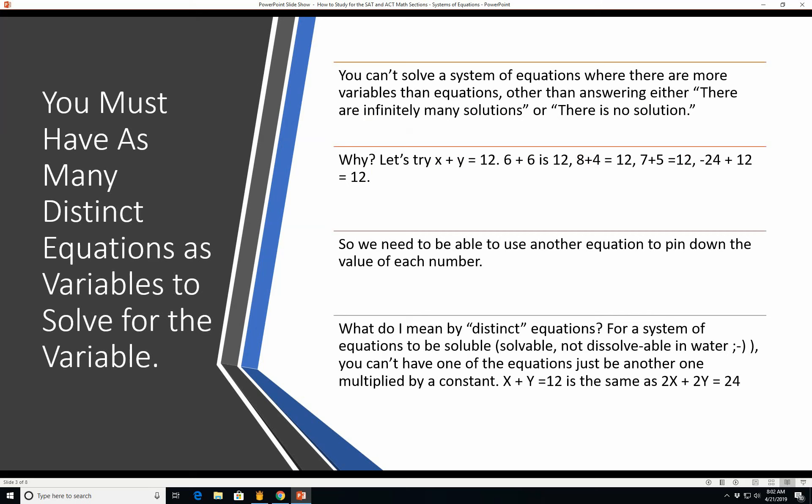Why? Let's try x plus y equals 12. 6 plus 6 is 12, 8 plus 4 is 12, 7 plus 5 is 12, negative 24 plus 12 is also 12. So we see there are literally an infinite number of values that could be x and y. So we need to be able to use another equation to pin down the value of each number and you have to have the same number of distinct equations as you do variables.